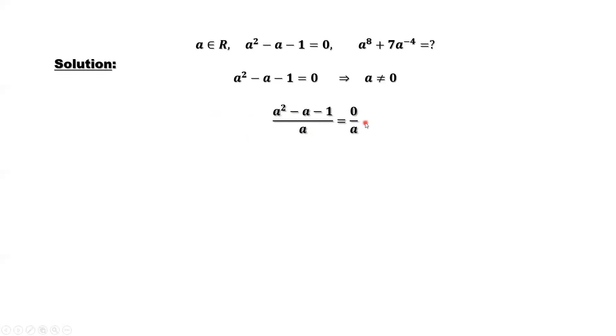Simplify both sides. The left-hand side is a minus 1 minus 1 over a. The right-hand side is 0. Move negative 1 to the right-hand side. We have a minus 1 over a equals 1.